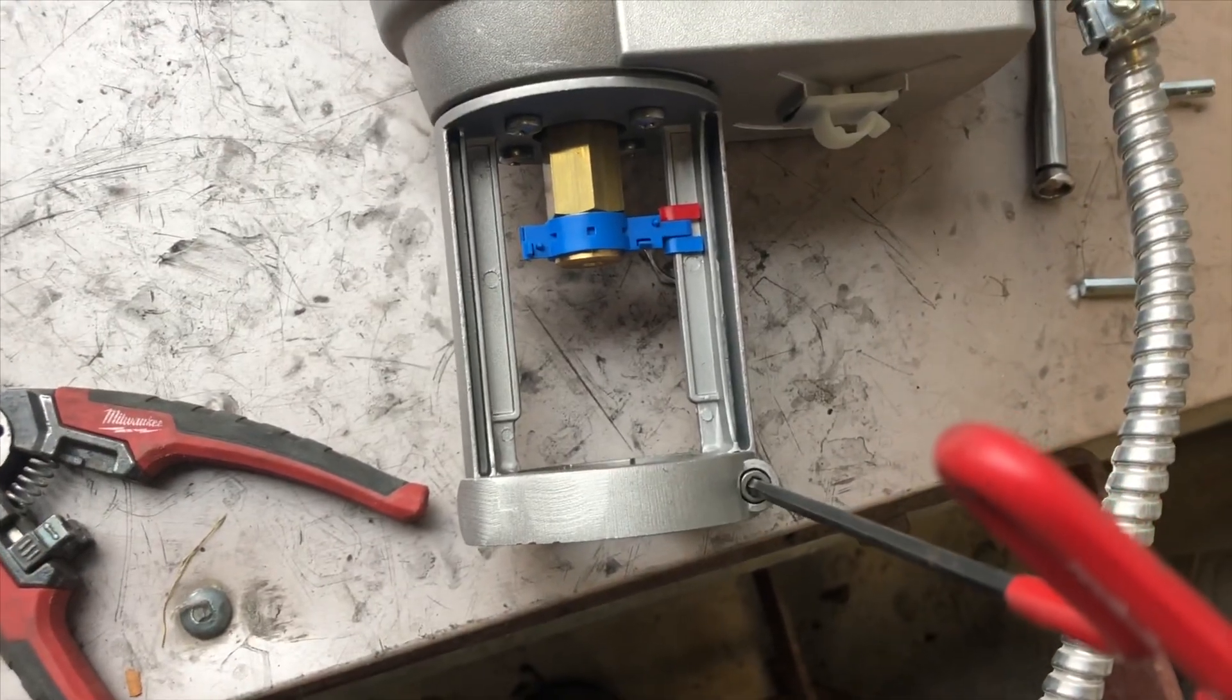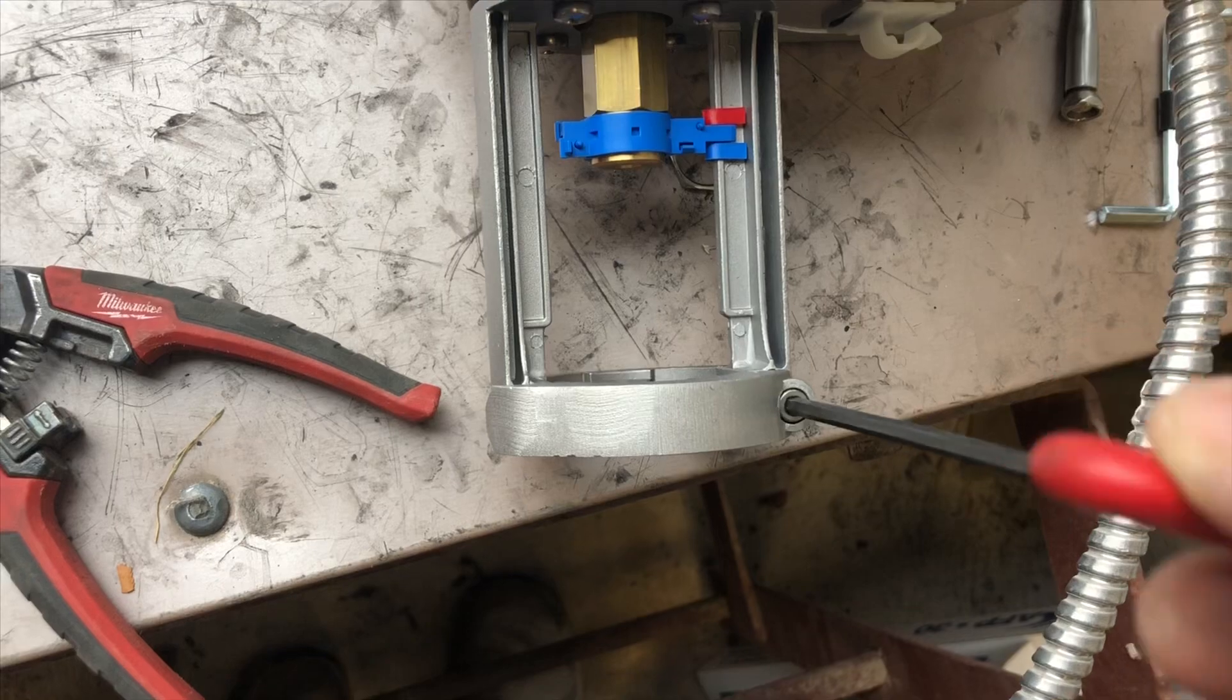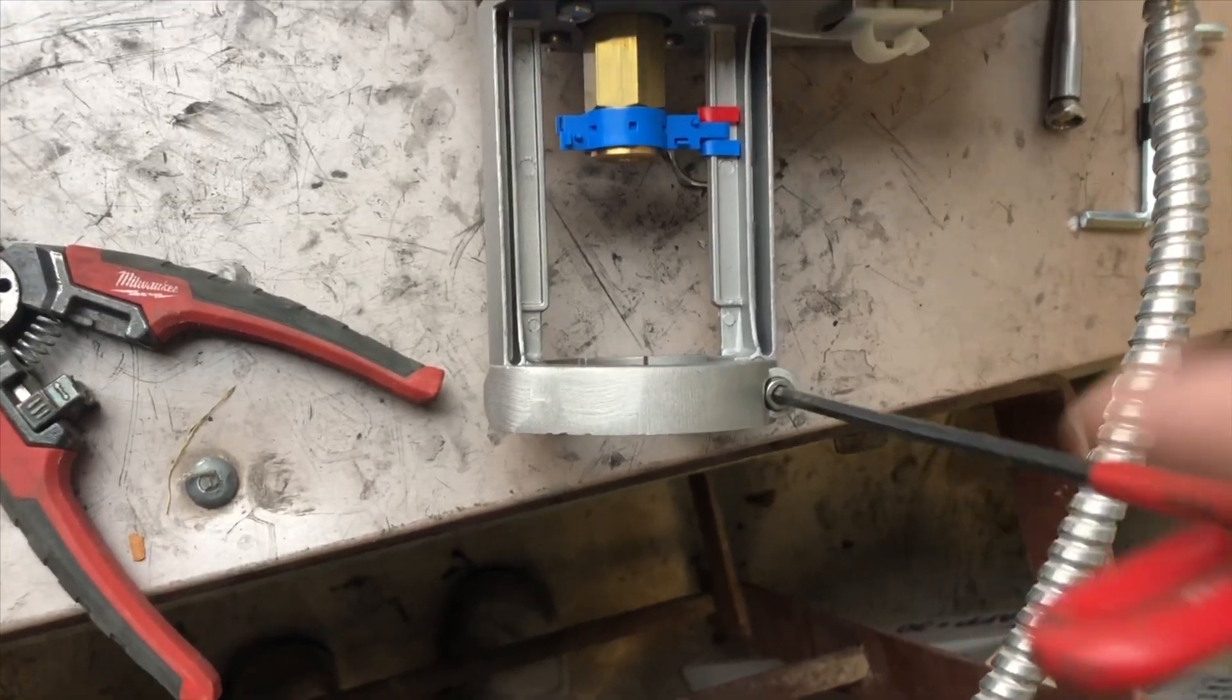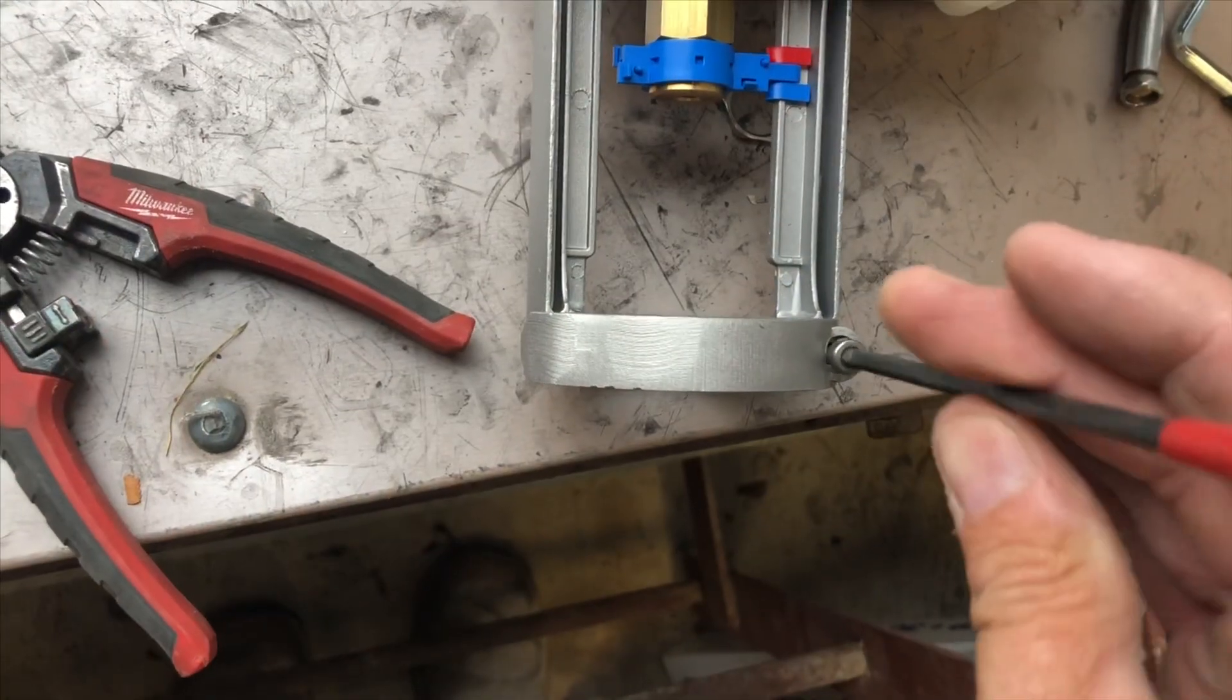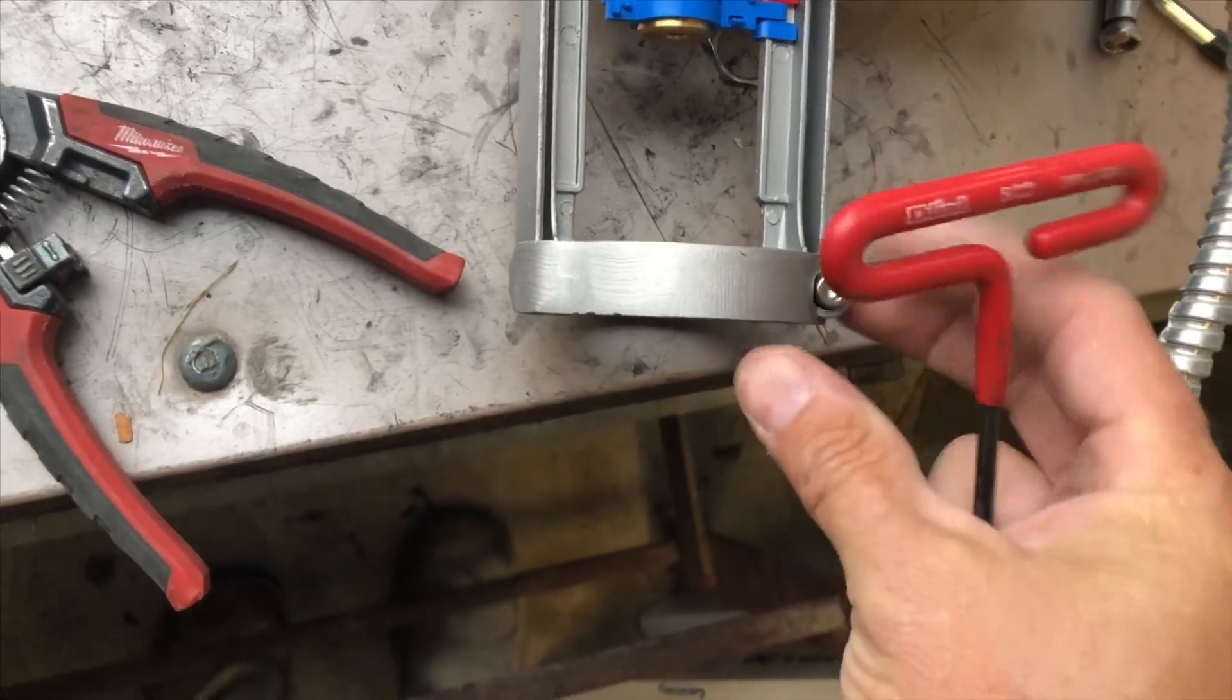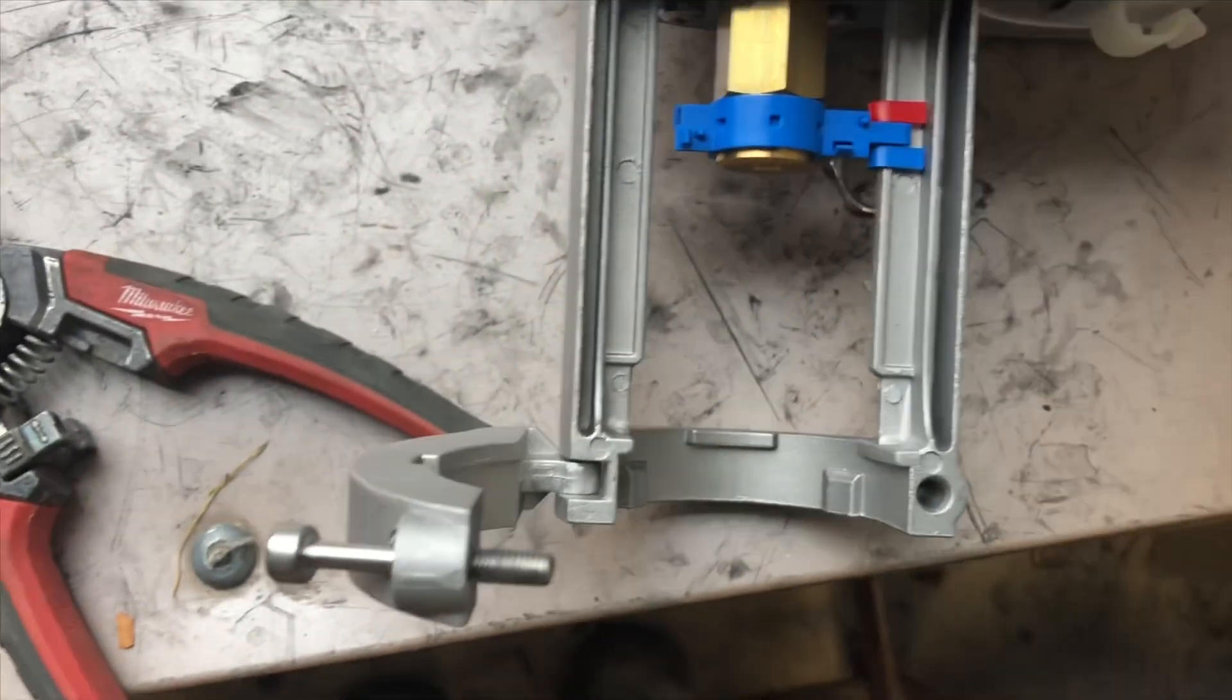Before we can place the valve actuator on top of the valve, we have to take this screw out, this set screw. And this is how it locks on top of the valve. The screw comes loose and that opens up and sets on top of the valve.